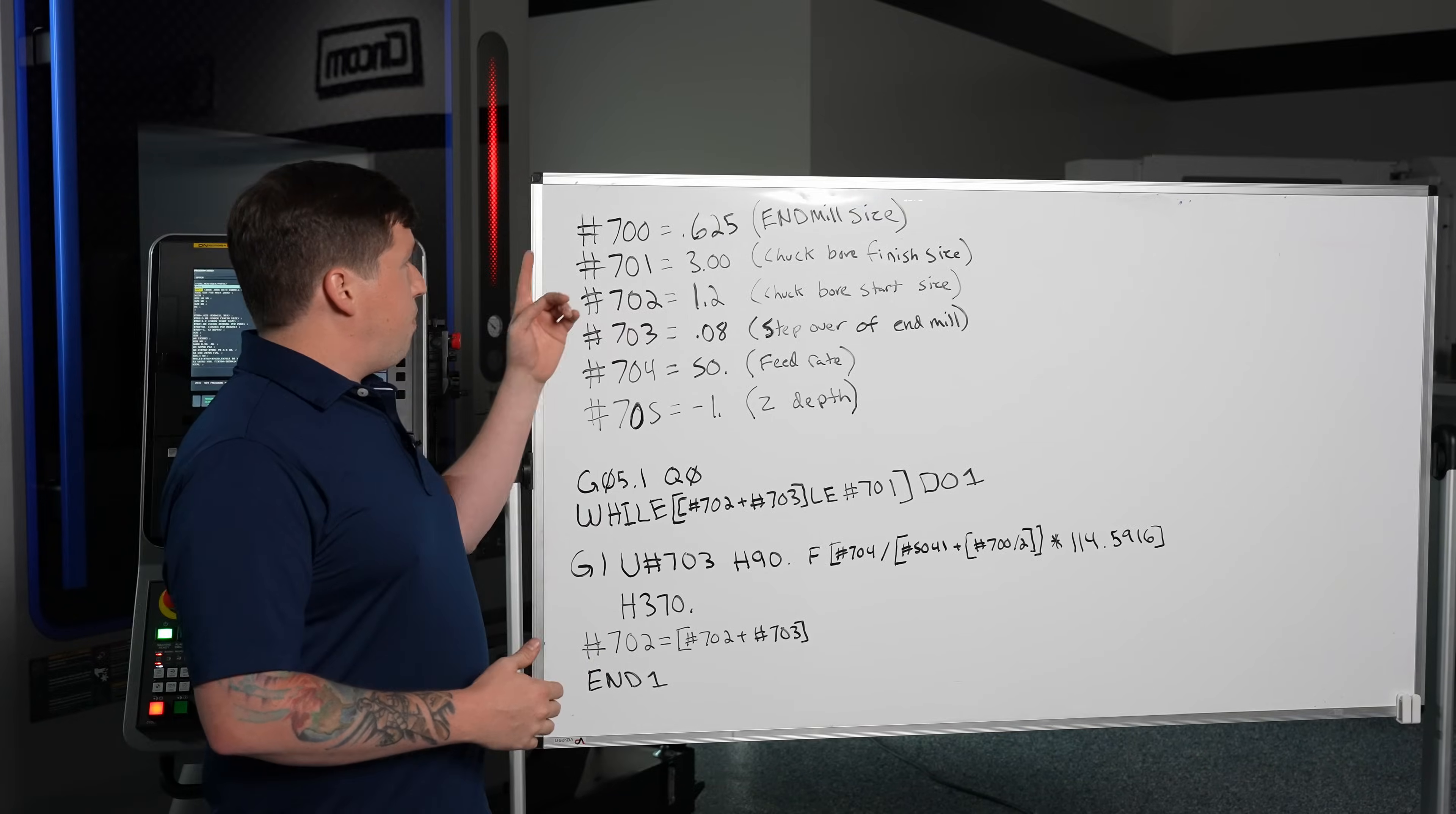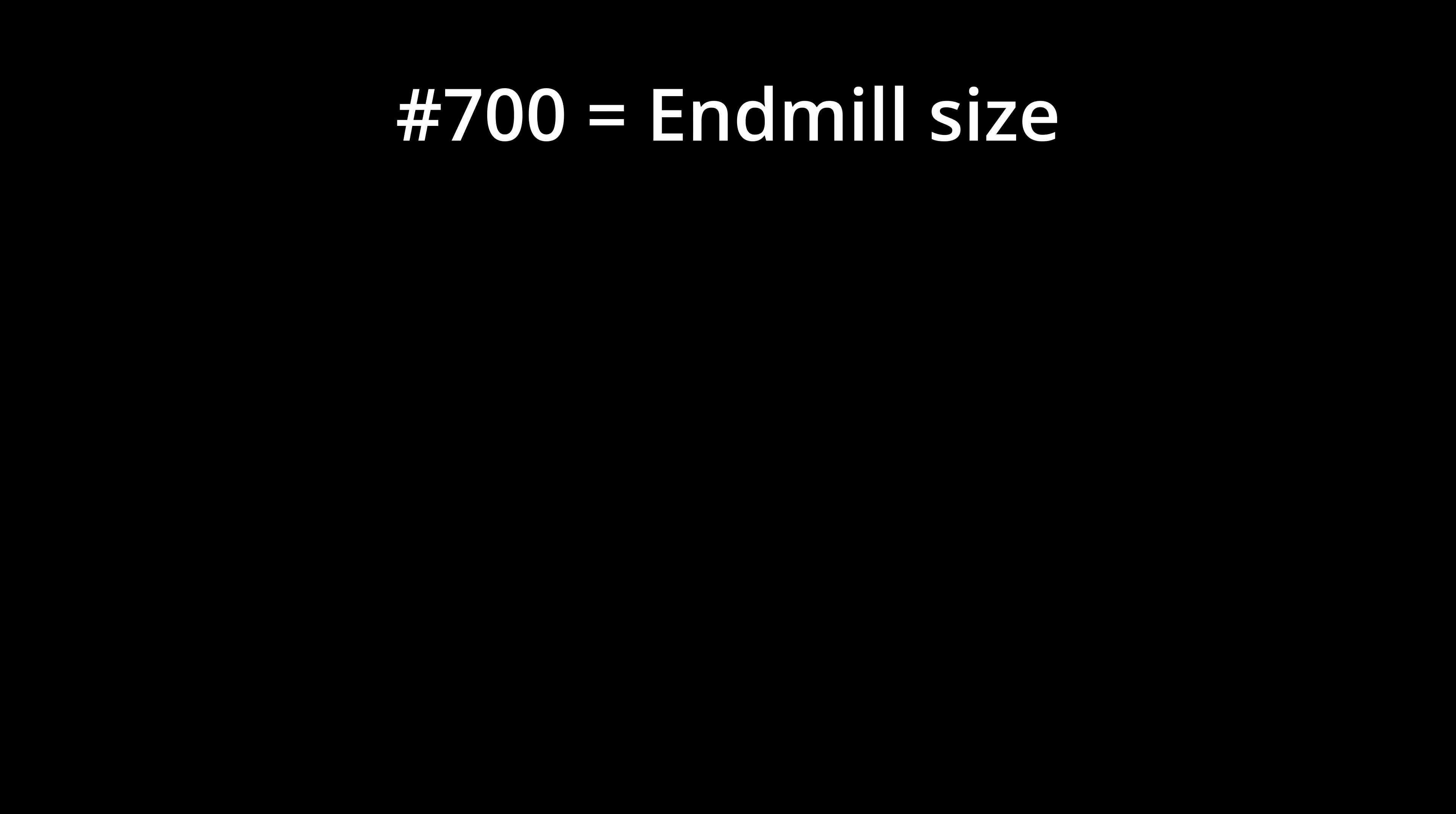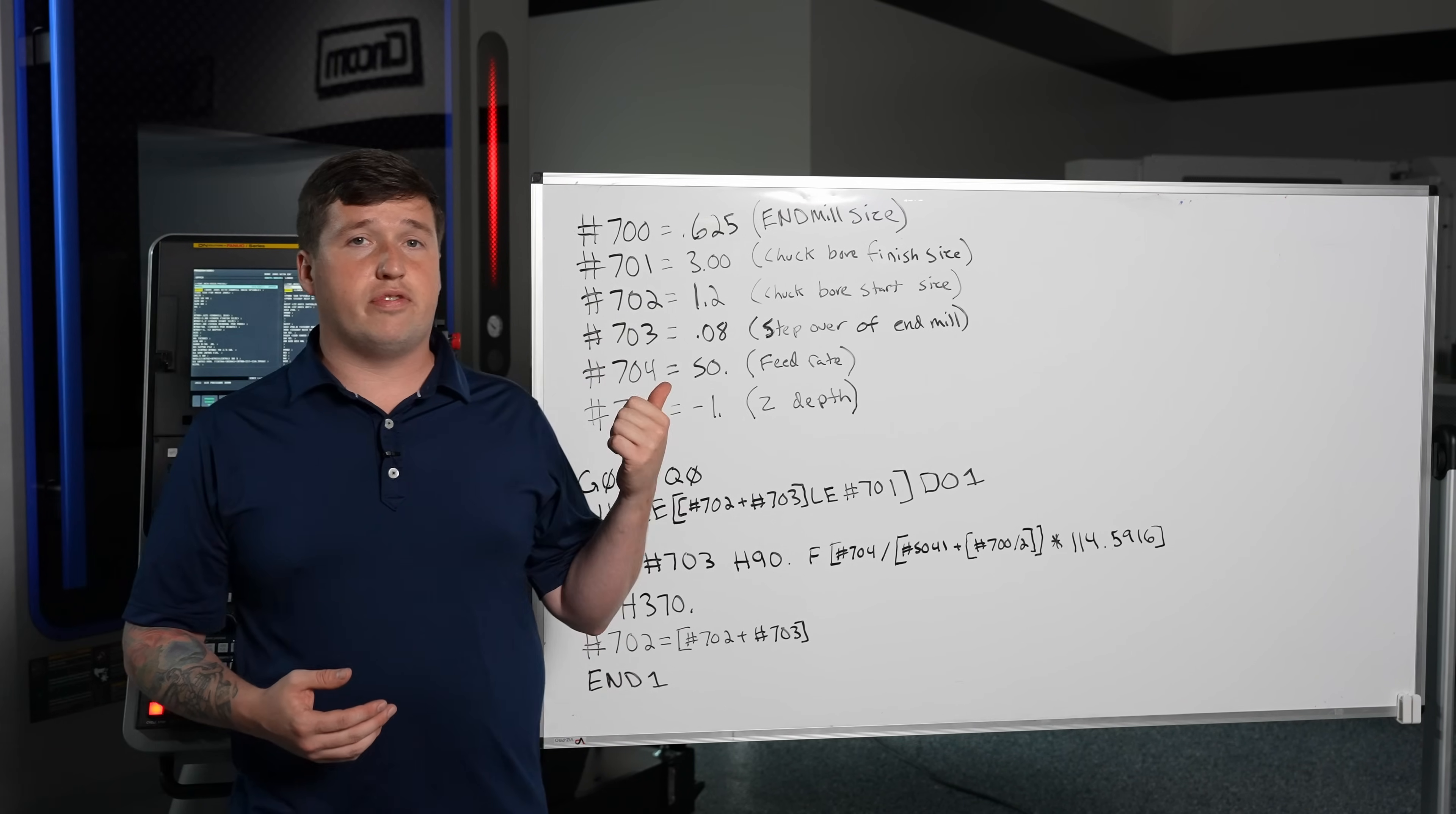So there is pound 700 which is going to be your end mill size. Now in this example here I'm using a 5 eighths end mill so I will enter in 0.625.